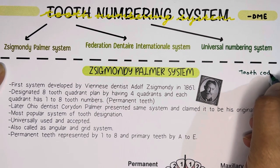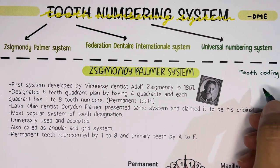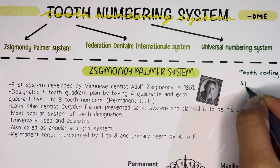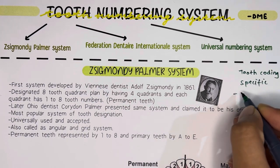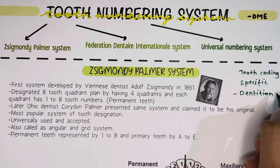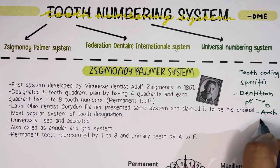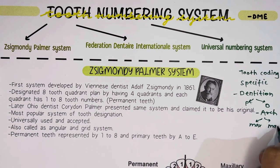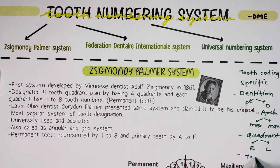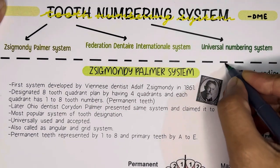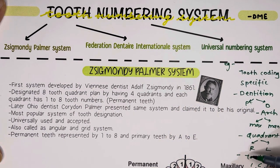Before starting with the tooth numbering systems, there was a tooth coding system which was used. When identifying any particular tooth, they used to follow a specific pattern: first, the dentition — whether it is permanent or deciduous; next, the arch — maxillary or mandibular; then the quadrant — right or left; and finally the tooth name — incisor, canine, premolar, or molar. For example, they would say 'permanent maxillary right first premolar,' which was very difficult to communicate with.